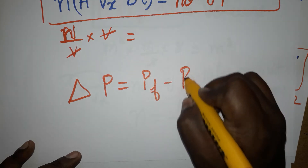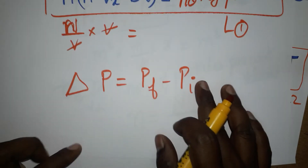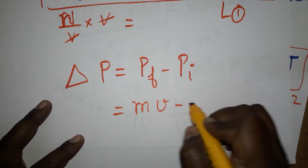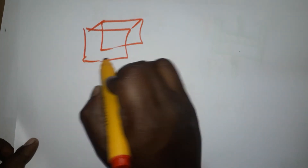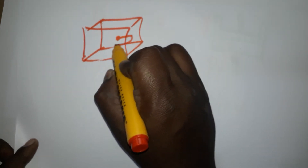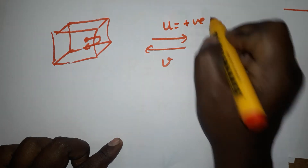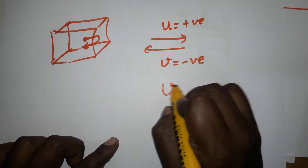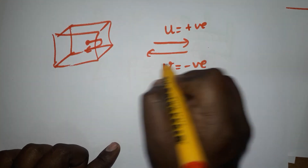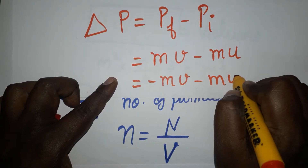Change in momentum equals final momentum minus initial momentum — this is equation one, representing the number of particles. Change in momentum: final momentum mv minus initial momentum mu. In the cuboid, I consider only the x-axis: the particle moves and hits the wall and comes back. Going is velocity u (positive), coming back is velocity v (negative). Since momentum is conserved, v equals u, so the change in momentum is -mv - mu.